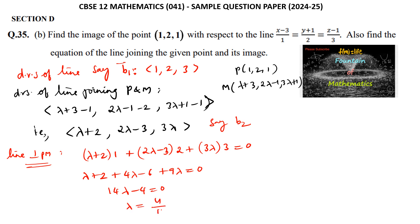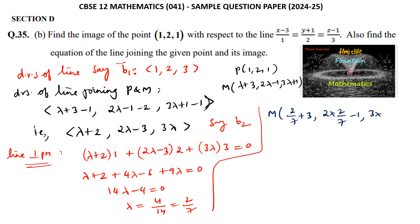So λ = 4/14 = 2/7. The coordinates of point M are: (2/7 + 3, 2·(2/7) − 1, 3·(2/7) + 1) = (2/7 + 21/7, 4/7 − 7/7, 6/7 + 7/7) = (23/7, −3/7, 13/7).